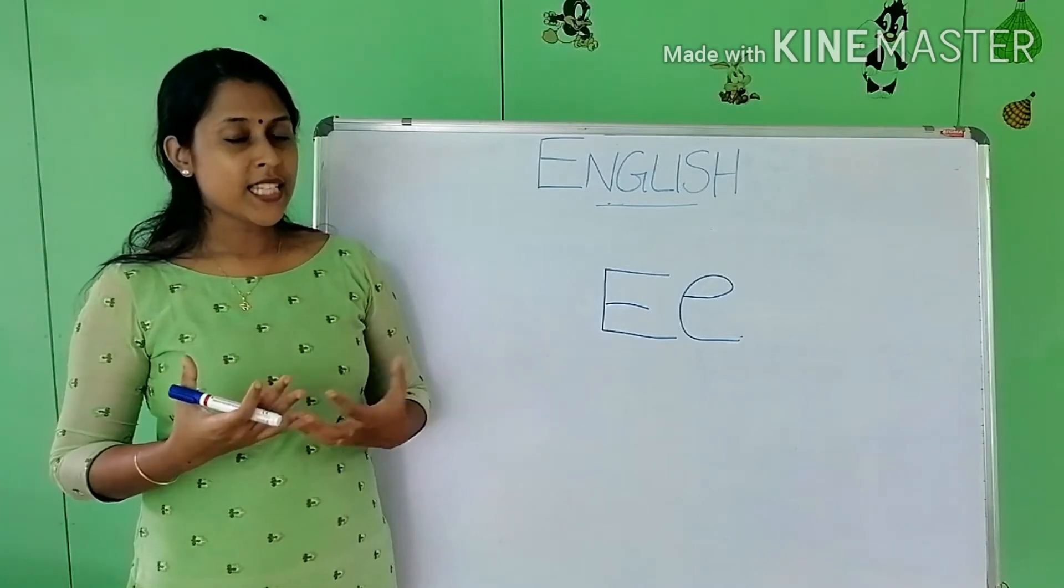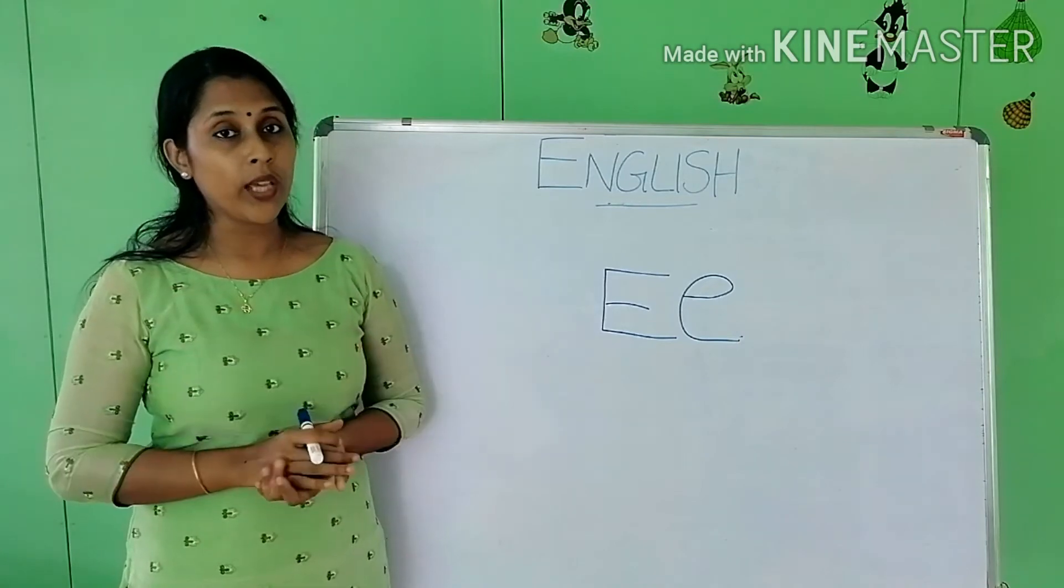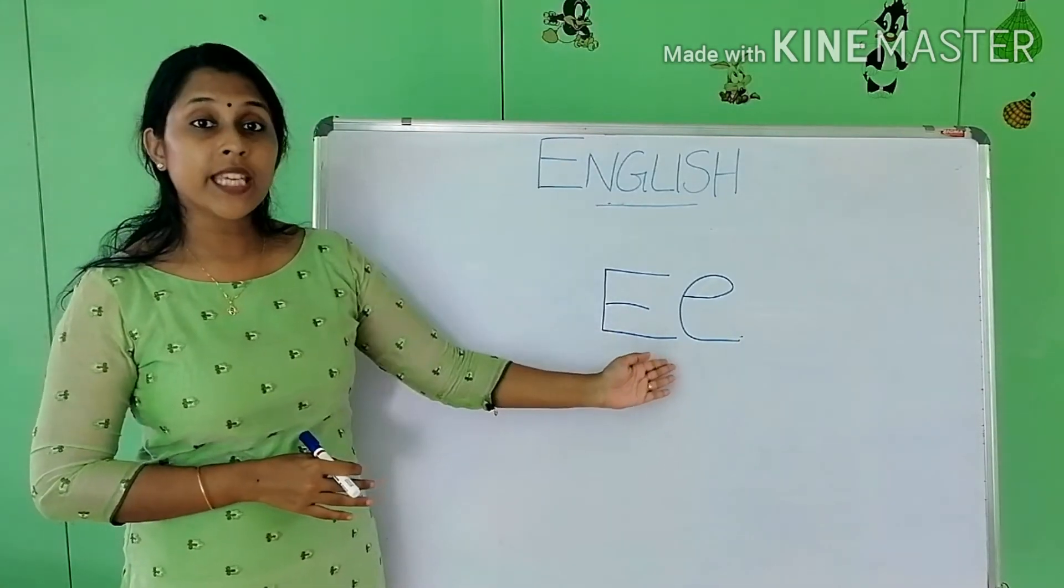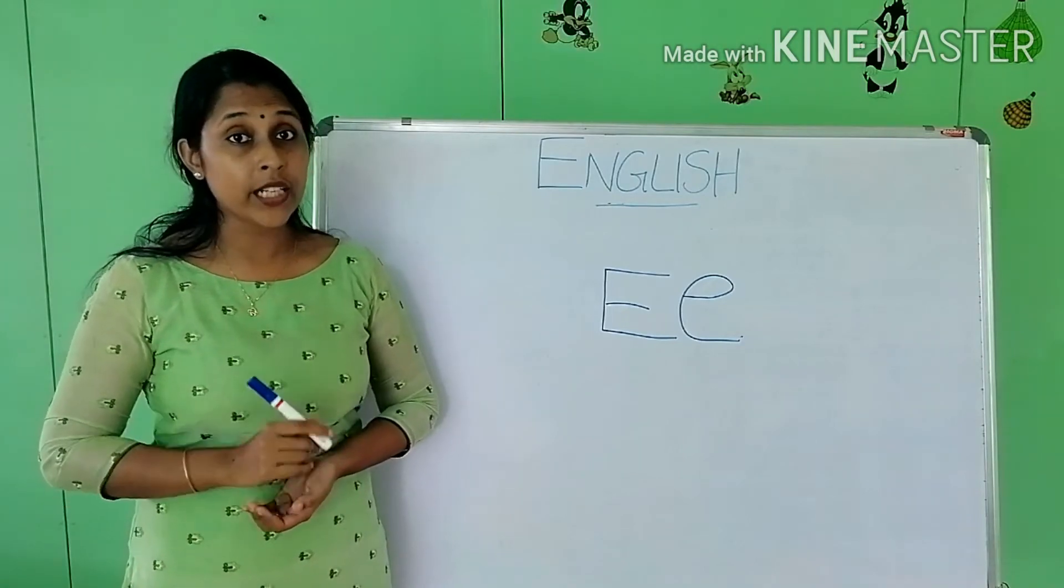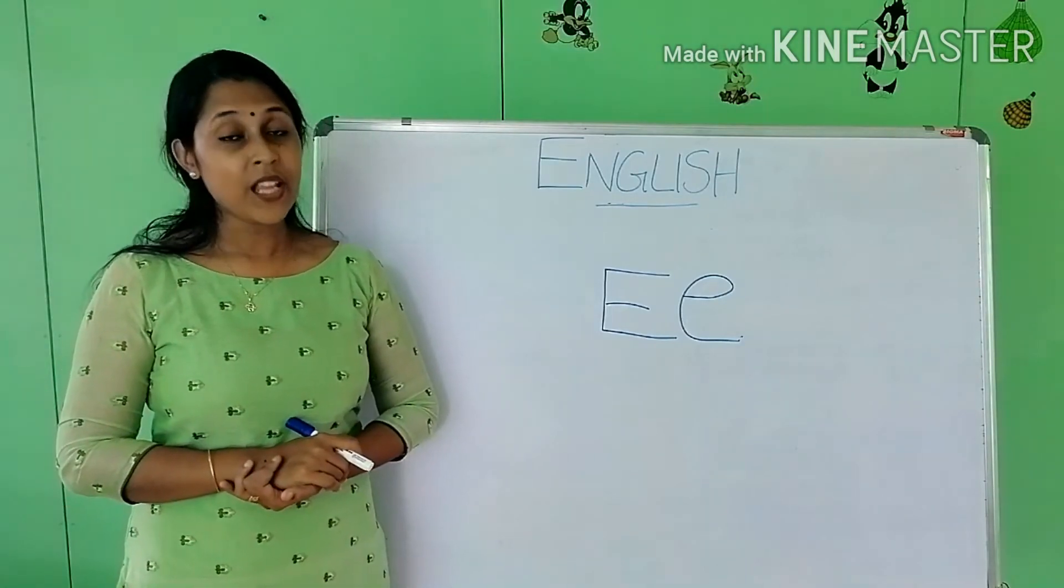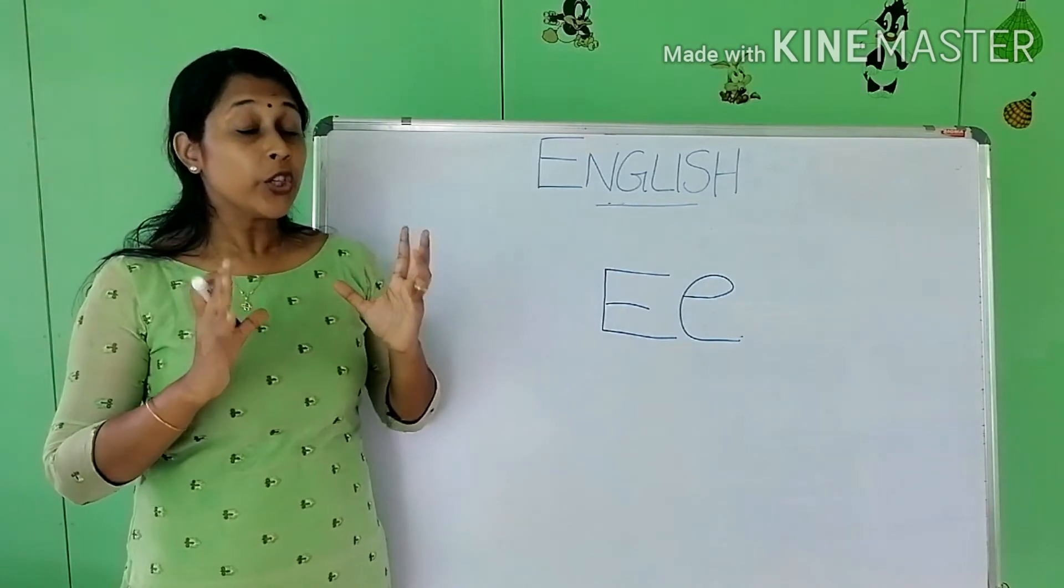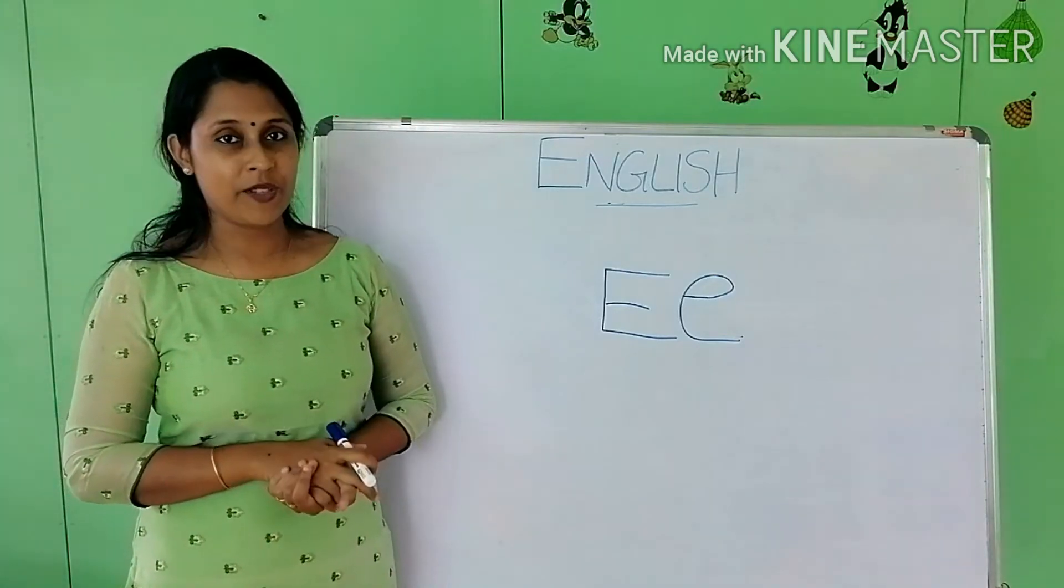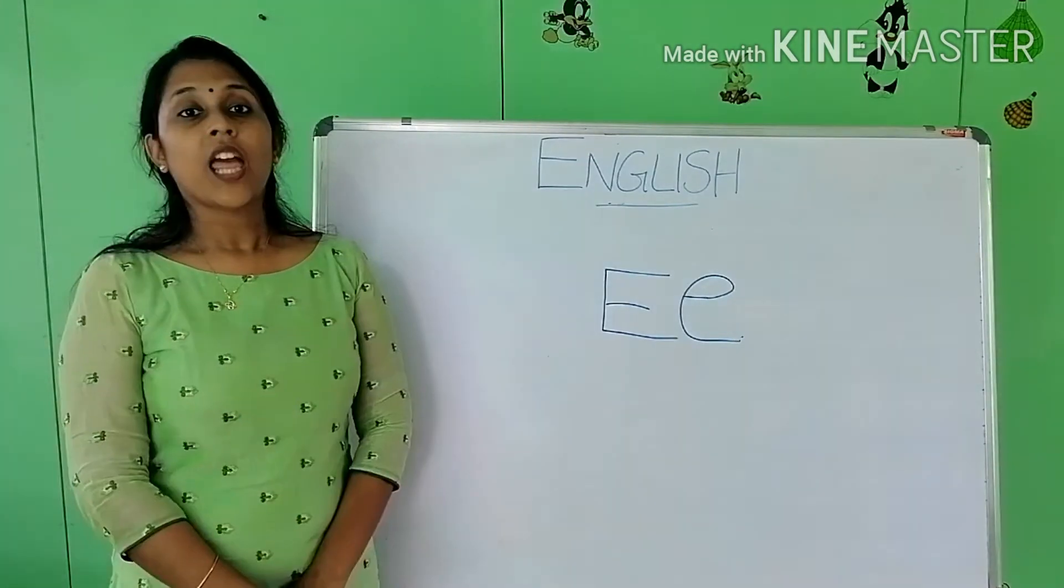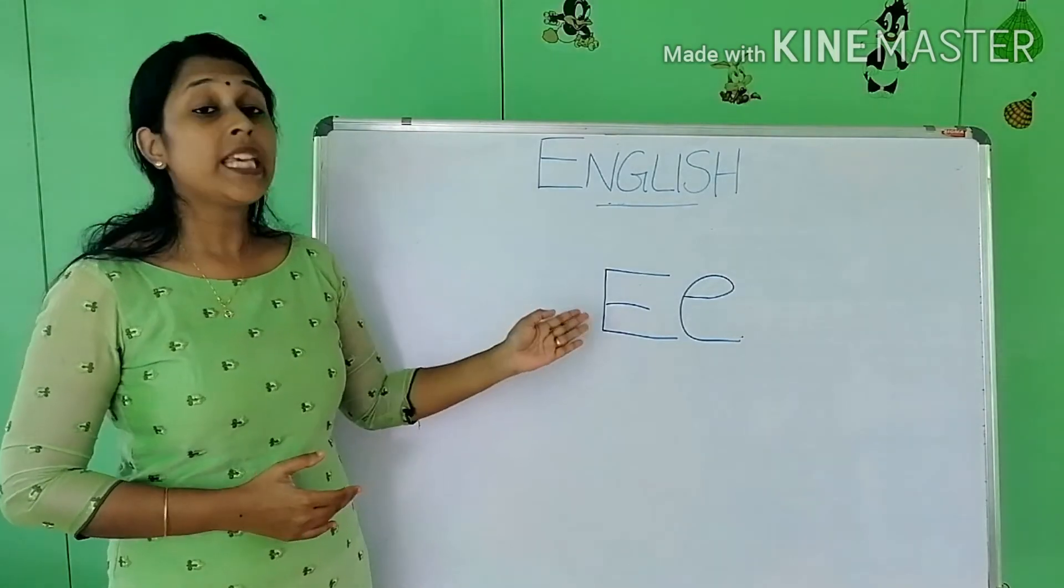Now let's get familiar with some of the words that start with the alphabet E. Listen carefully. You have to study these words, and also whenever you see these objects you must be able to identify the names of these objects. Right. The first word that starts with the alphabet E.